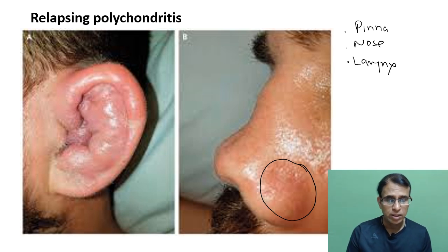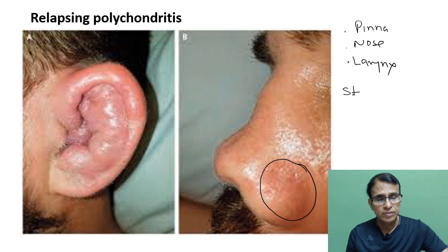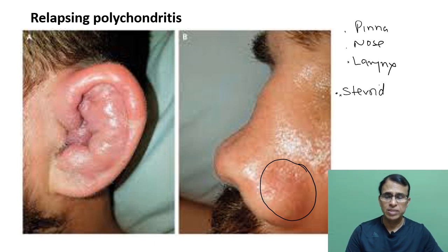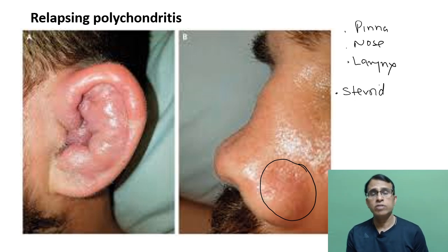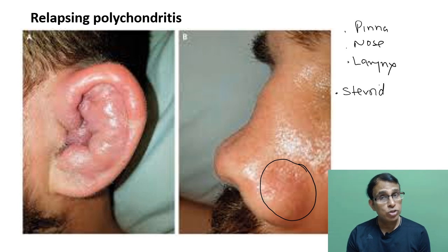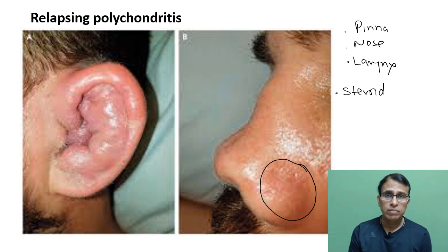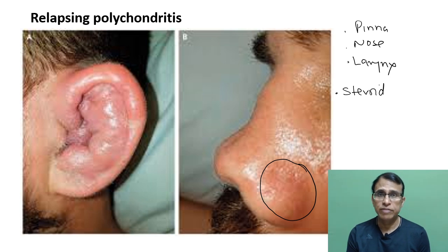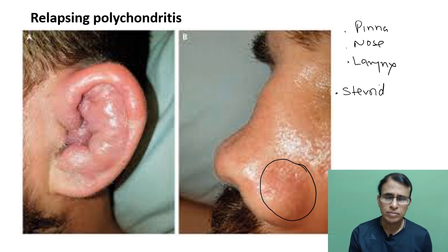Because it is immune-mediated, treatment is mainly steroids or immune suppressants. However, both have significant complications when given long-term, and once you stop the drug, the condition tends to come back — that is the serious problem. Moreover, it can involve cartilages of vital structures like heart and lungs, making it life-threatening. ENT has a lot of cartilages — pinna, nose, larynx — making relapsing polychondritis very important from an ENT perspective.